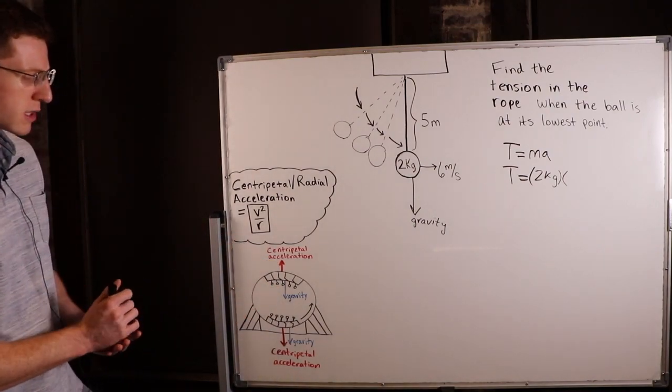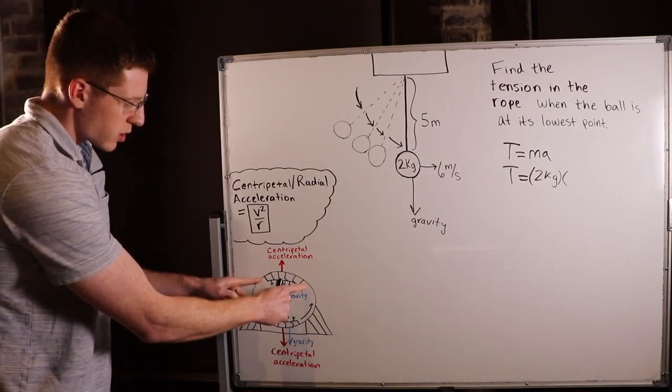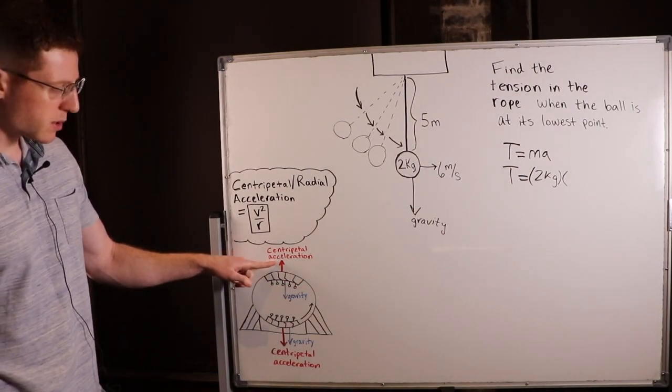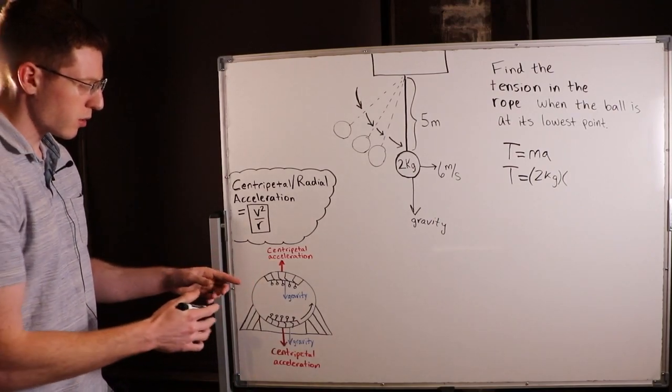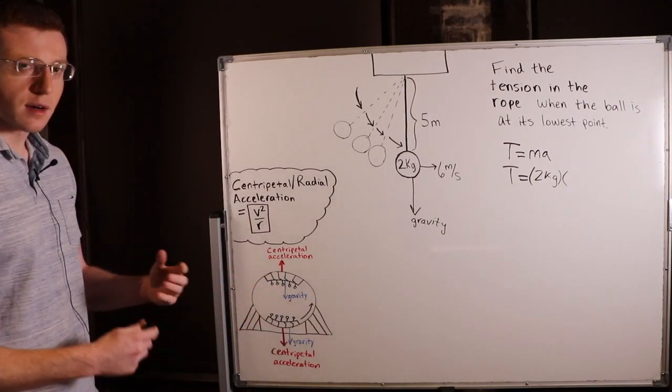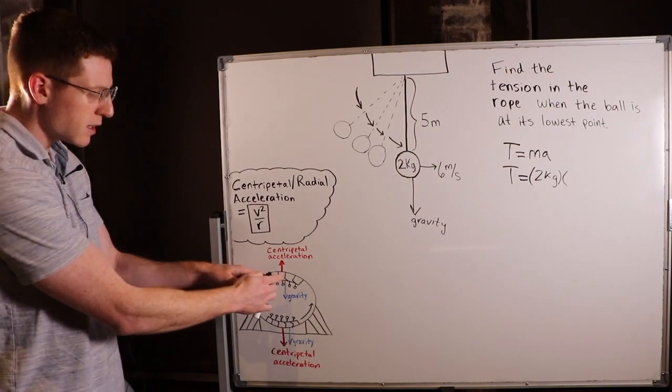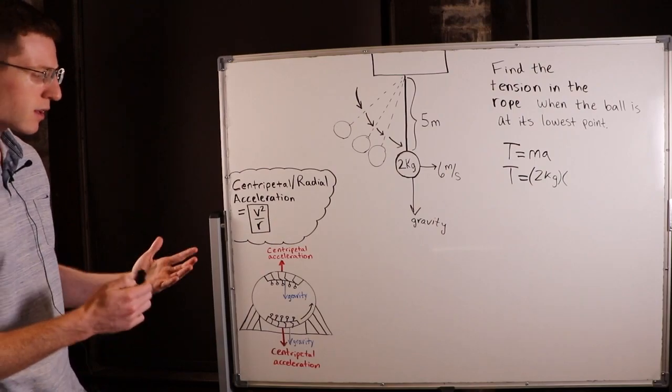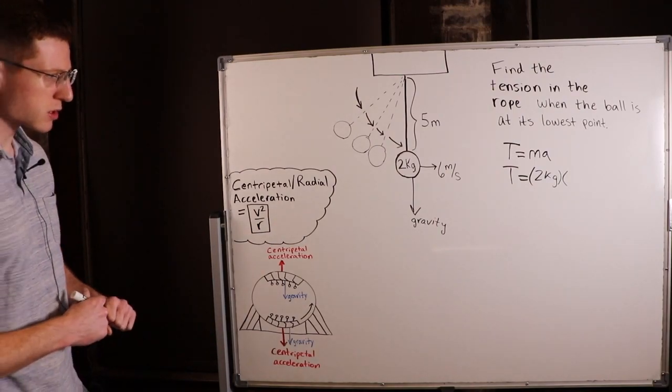You know, if this roller coaster were to stop right here, you would have no more centripetal acceleration because you would no longer be moving in a circle. Gravity would take over and unless you were properly secured in your seat, you could fall out. That's why centripetal acceleration is so important in the calculation and engineering of making a roller coaster.